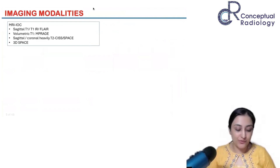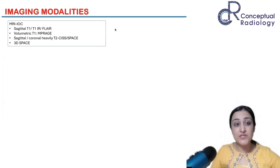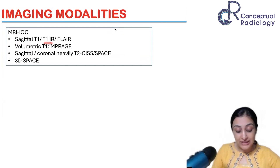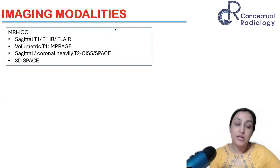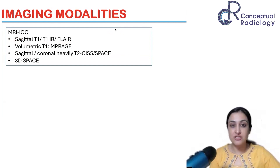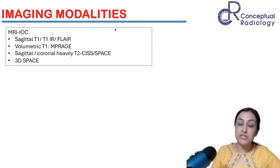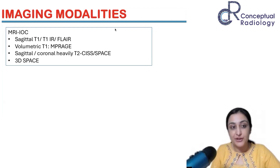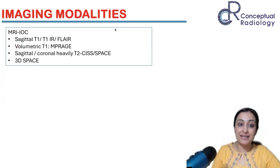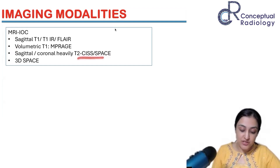The imaging modality of choice is MRI — the one and only investigation needed here. Key sequences to keep in mind: sagittal T1 inversion recovery or T1 FLAIR, which is not routinely done but must be done here because it shows the best gray matter/white matter differentiation. That is your primary sequence. Normally your first MRI sequence is sagittal T2, but when suspecting a congenital brain anomaly, start with sagittal T1. A volumetric sequence like MP-RAGE is also a good idea.